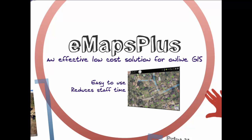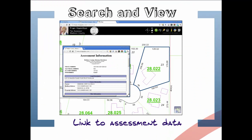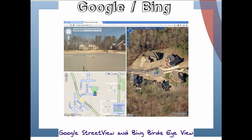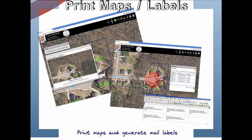The web-enabled software allows users to search properties and view the associated assessment database. E-Maps Plus allows users to link to Google Street View and Bing Birdseye View to see aerial oblique photos and curbside views of the property. E-Maps Plus also allows users to measure areas and distances, and print property record reports with embedded site maps.